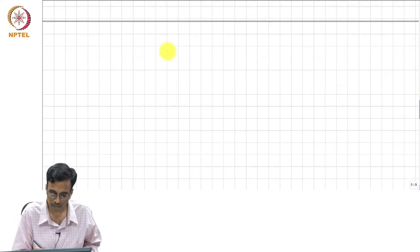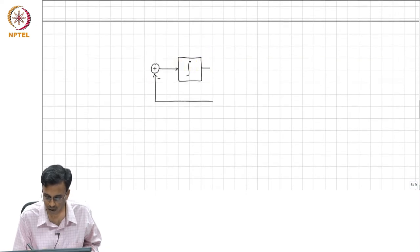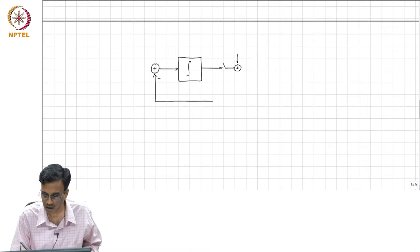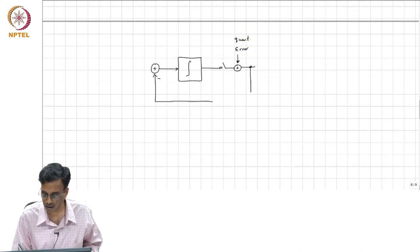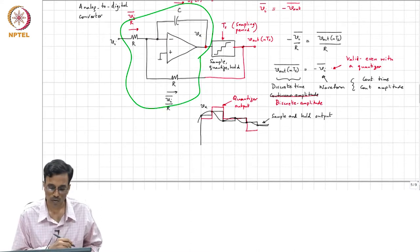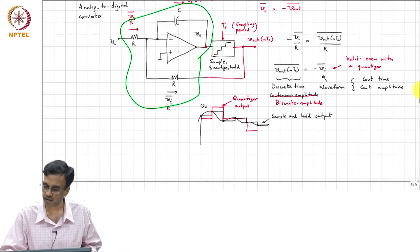This is the principle behind what is called a continuous-time delta-sigma converter. If you think about it in block diagram form, we have an integrator. The output is sampled and quantized — quantization can be thought of as introducing some error — and you feed it back. This is nothing but a continuous-time integrator with two inputs.